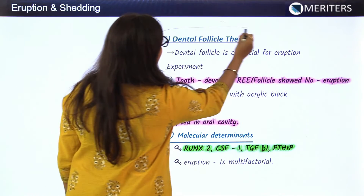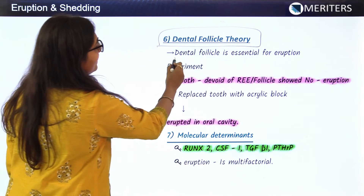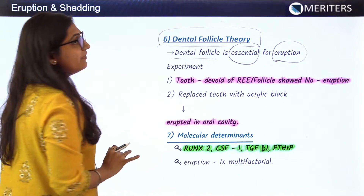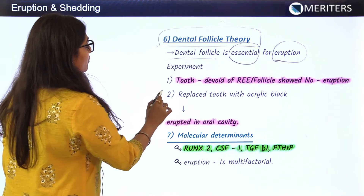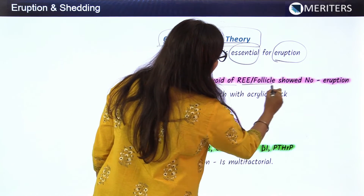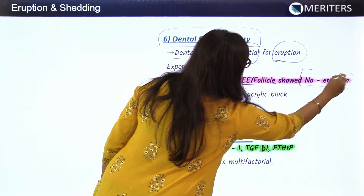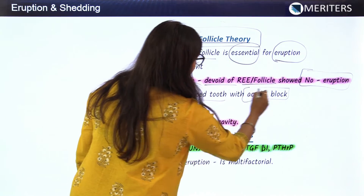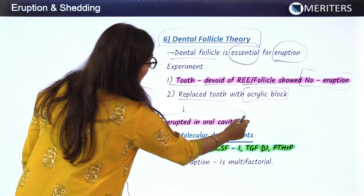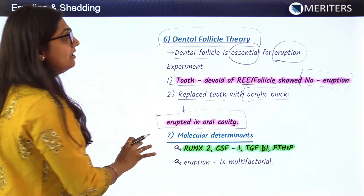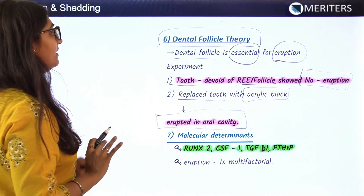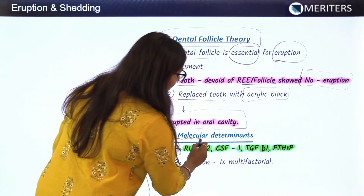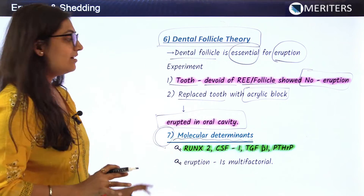The dental follicle theory states that the dental follicle is an essential part of the eruption process. An experiment was performed: a tooth devoid of the follicle showed no eruption. But when the tooth was replaced with an acrylic block while keeping the follicle present, the acrylic block erupted into the oral cavity. This proved that the presence of the follicle is important for eruption.